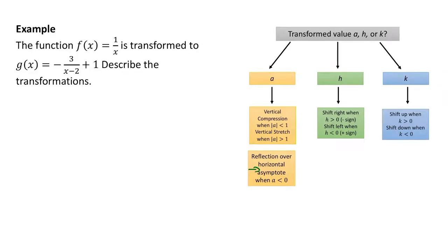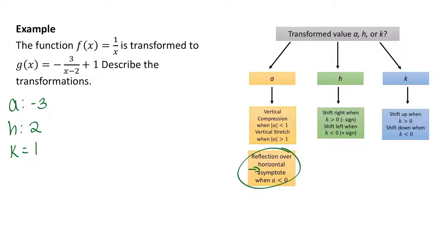Now let's look at this example. We have g of x equals negative 3 over x minus 2 plus 1. Let's describe the transformations. The values are: a equals negative 3, h equals 2, and k equals 1. The negative 3 has two effects — since a is less than 0 we get a reflection, and since 3 is greater than 1 we get a vertical stretch.